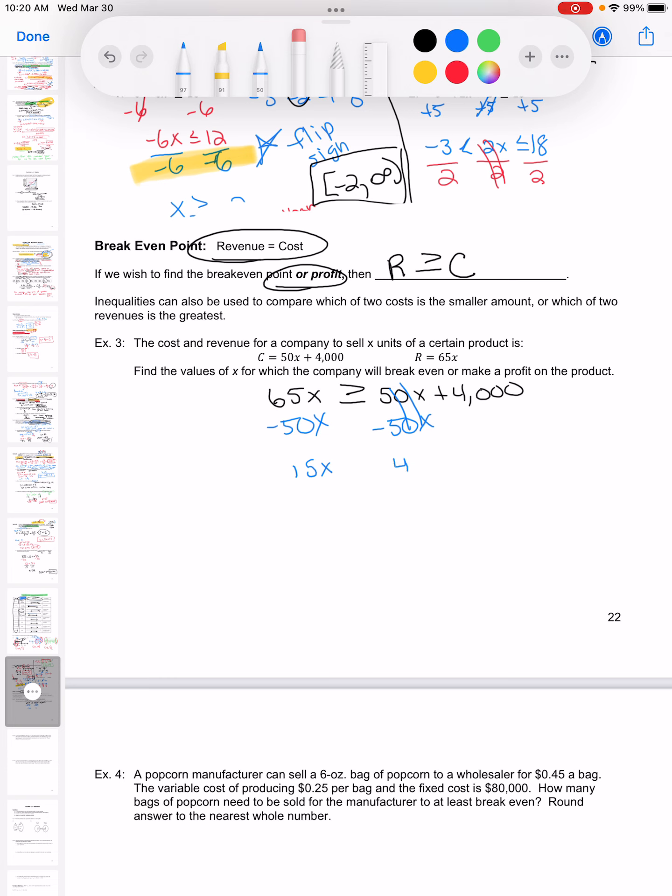Make that greater than or equal to sign look a little bit better. I'm going to divide by 15, and my calculator is going to give me a decimal that has a whole bunch of sixes and then a seven. We do want to round, so I'm going to go up to 267, because at 266 I would not have actually broken even. I need to sell more than 266, so I need to sell 267.